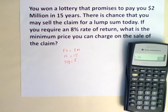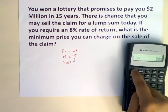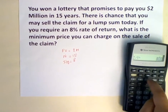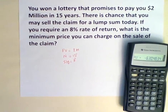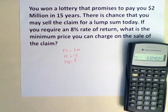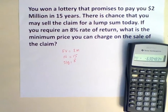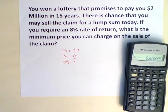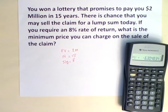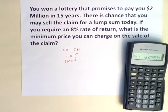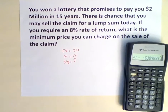Now we can easily compute for the present value by hitting CPT, PV. The present value equals $630,483.41. This means that this is the minimum price you would charge on the lottery claim if you were to require an 8% rate of return.